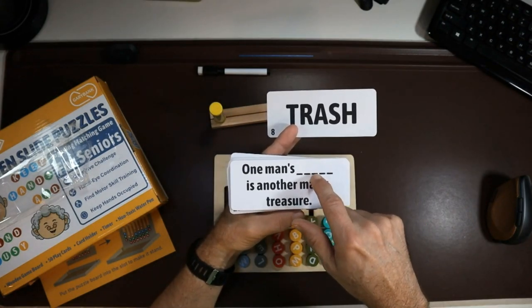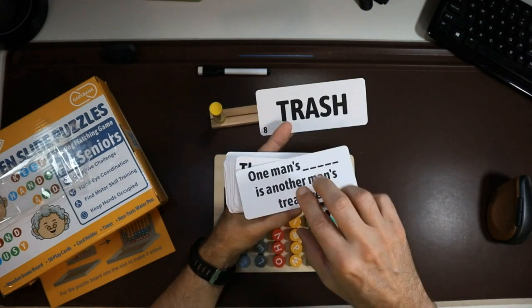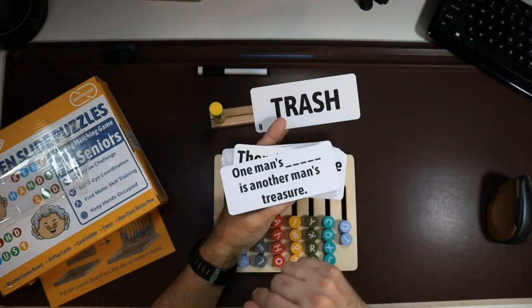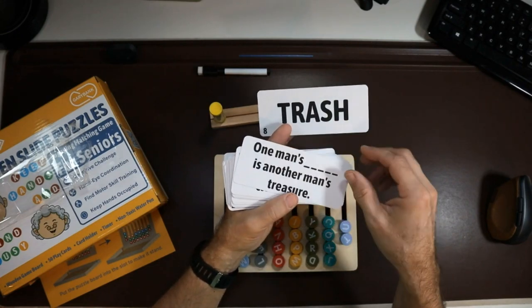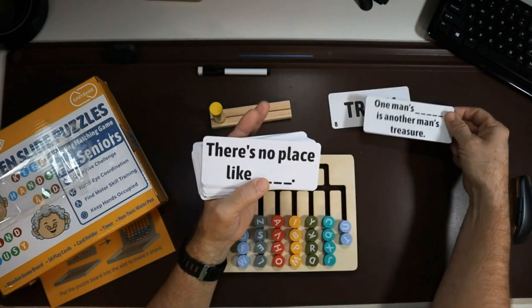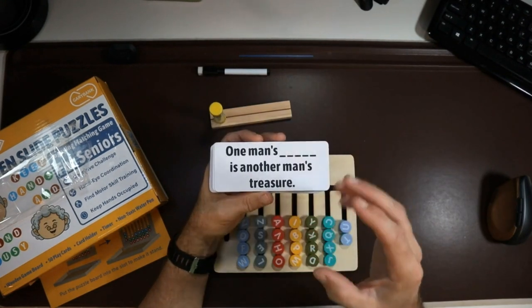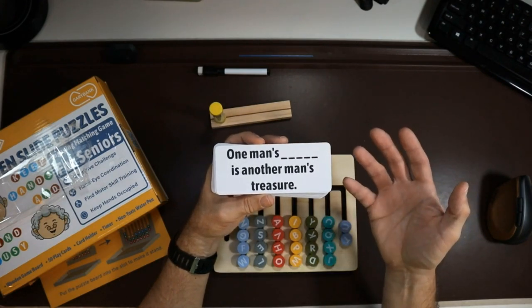For times you're not sure what the actual answer is, these cards are matched. You've got eight and eight, so the answer to this proverb on card eight is trash. You could also even make it like a matching type game where they could match up what goes together and check it with the numbers. Because it has all these options, you've got different ways you can play with people of differing levels of dementia.